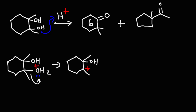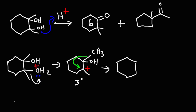Now we have a tertiary carbocation adjacent to a hydroxyl group, so we're going to get a rearrangement. The driving force is carbocation stability — if a carbocation can form a more stable intermediate, it's going to do it. So this methyl group is going to move towards the carbocation. Now all we have is the hydroxyl group on this carbon, and on the other carbon we have two methyl groups, but we have the plus charge on that carbon with the hydroxyl group. In the next step, we're going to donate a pair of electrons to form a pi bond.